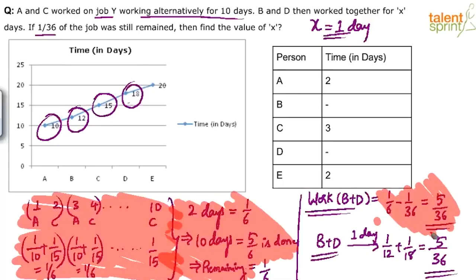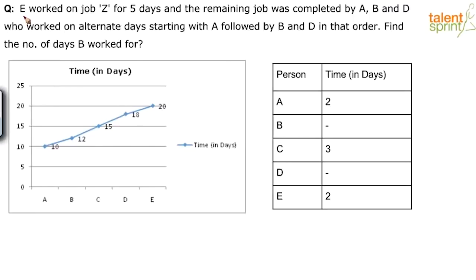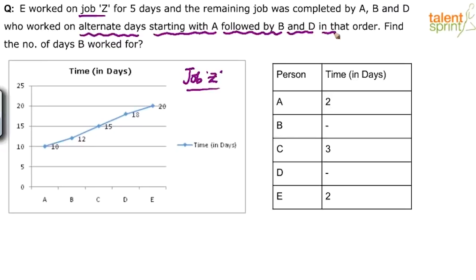Now let's discuss the next problem. E worked on job Z for 5 days, and the remaining job was completed by A, B, and D, who worked on alternate days starting with A, followed by B and D in that order — find the number of days B worked. Job Z has the same requirements as X and Y. So A takes 10 days, B takes 12 days, C takes 15 days, D takes 18 days, and E takes 20 days for job Z. The pattern is A, then B, then D, then A, B, D again and so on — but this only starts after E has worked for 5 days.